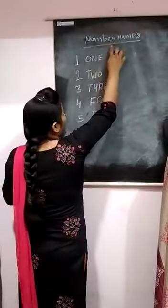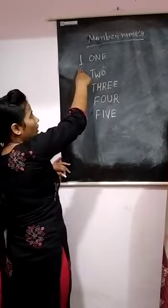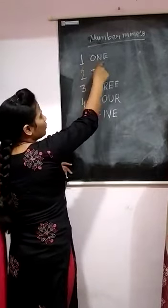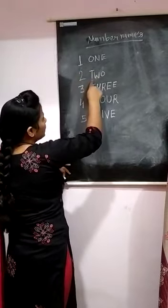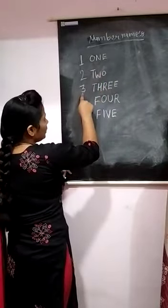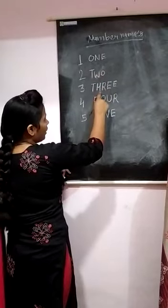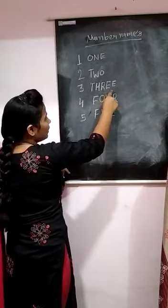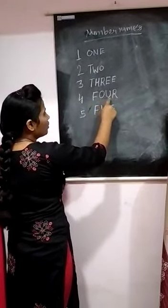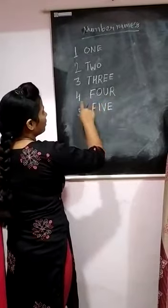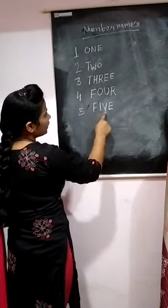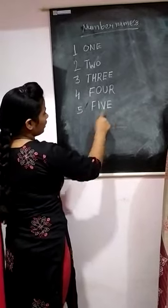Number names. One — O, N, E — one. Two — T, W, O — two. Three — T, H, R, double E — three. Four — F, O, U, R — four. Five — F, I, V, E — five.